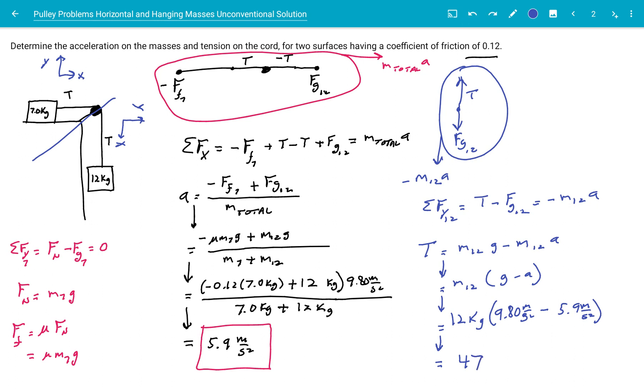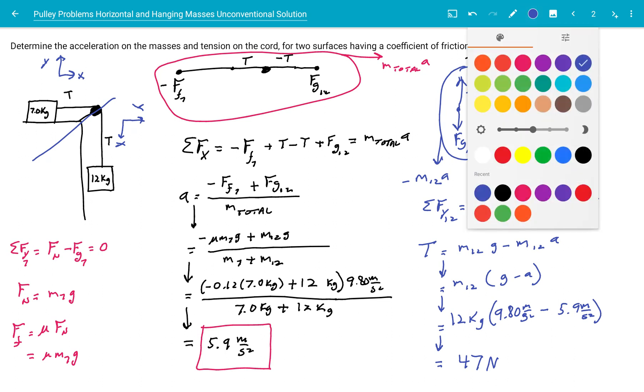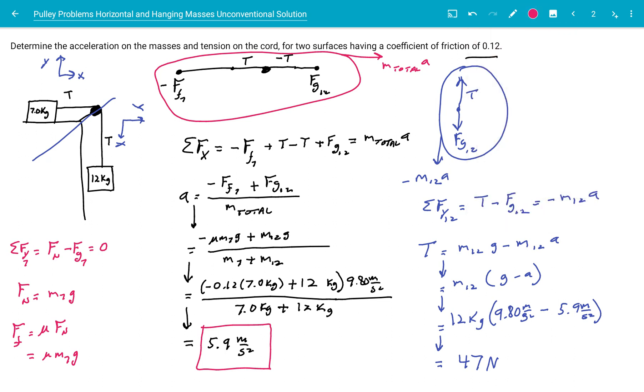That also makes sense. It should be a little more tension because there's friction. So we have to put a little more force to get the boxes moving. So this is the unconventional method. I hope this works out for you. And keep practicing physics. And look out for my conventional method of how it's normally taught in textbooks. All right, bye.